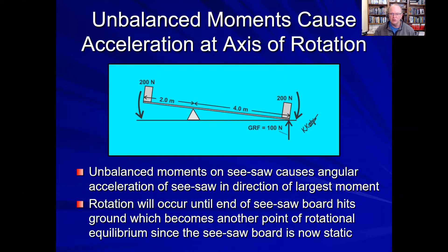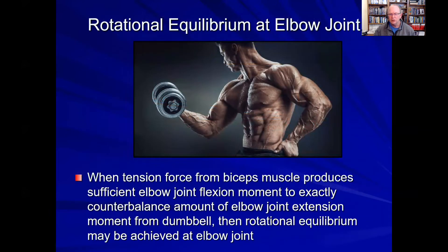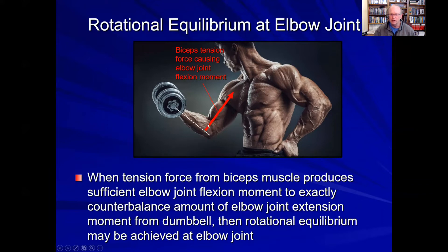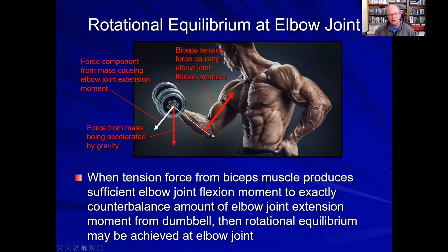The bottom line is that rotational equilibrium is important to understanding the forces acting on and within the joints of the body. Looking at the elbow joint: when holding a barbell statically with the arm flexed to approximately 90 degrees, the biceps and elbow flexor forces produce a flexion moment, while the barbell's weight creates a perpendicular extension moment. Until that extension moment is exactly equal to the flexion moment, the weight lifter can hold the barbell perfectly still — in rotational equilibrium.